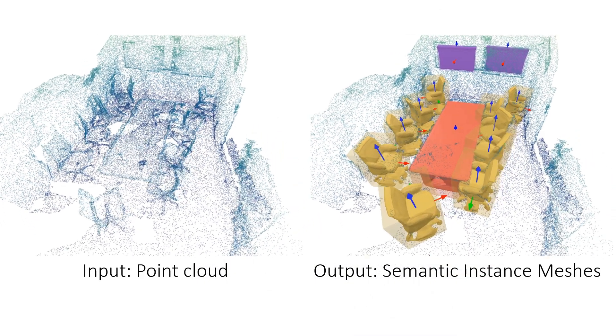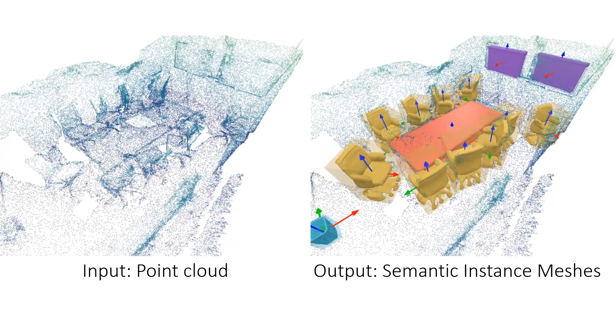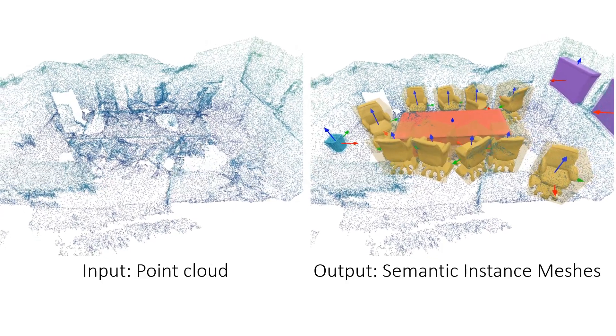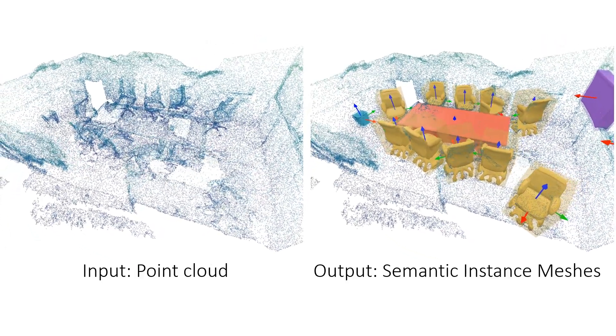From an incomplete point cloud of a 3D scene, our method learns to jointly understand the 3D objects with semantic labels, poses, and generates high-quality object meshes at the instance level.